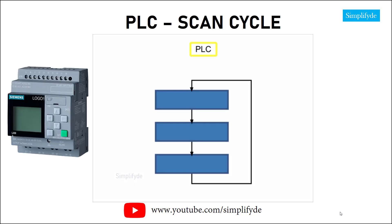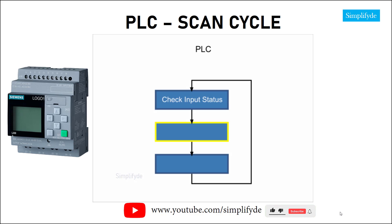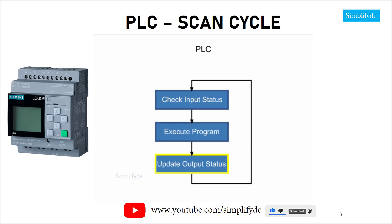PLCs control processes by continually scanning the ladder logic program. The scan of a PLC consists of three major steps: Step 1, check input status; Step 2, execute program; and Step 3, update output status.